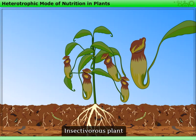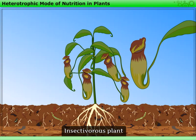These plants, also called insect-eating plants, grow in soil containing fewer nutrients. So they feed on animals like insects to fulfill their nutrient requirement.